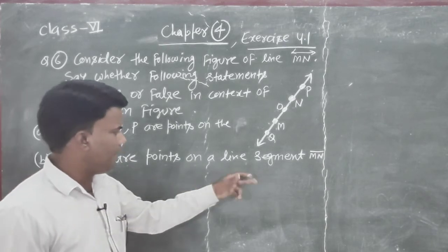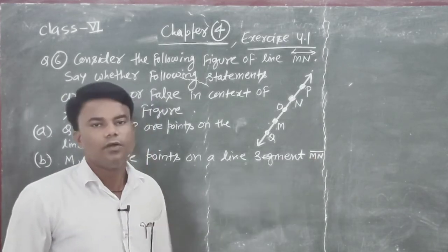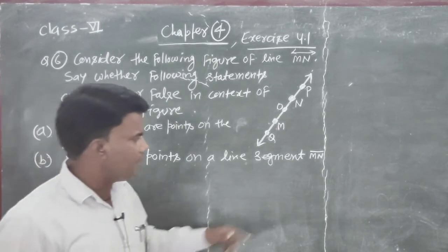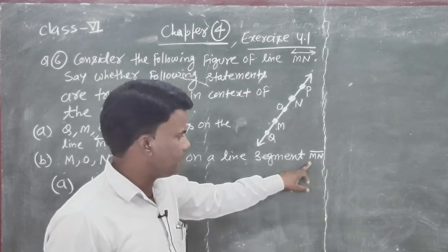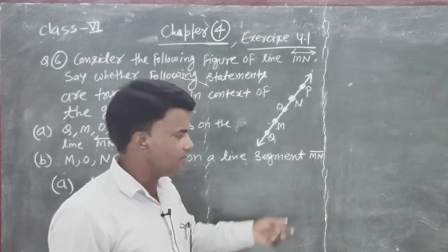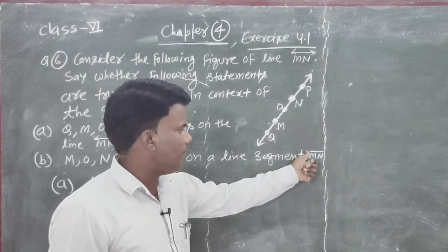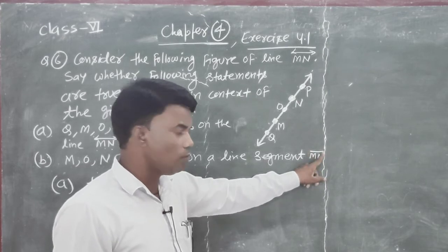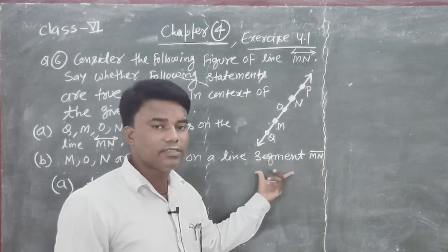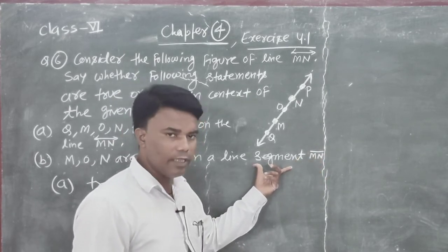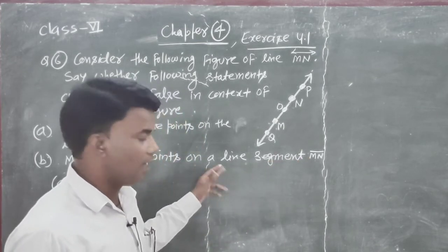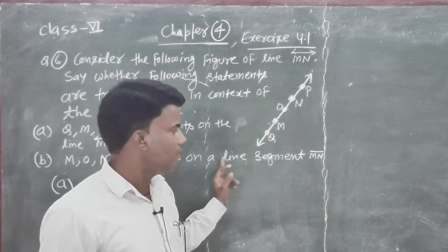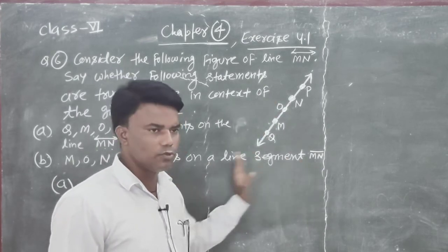Line segment kya kya ise denote karati, MN. Line segment on line name, nai difference. Line segment upar simple par si represent karati, airou represent ne hoata. Line kya denote hoata, both sides can be extended.